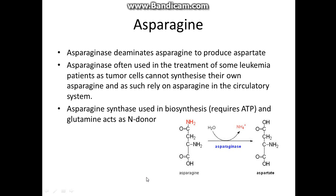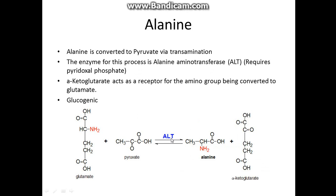Asparagine is named after asparagus, which is the first place it was isolated from. Asparaginase deaminates asparagine to produce aspartate, with water released in the process. The enzyme asparaginase is actually used as a treatment for some leukemias, because tumor cells cannot synthesize their own asparagine and rely on asparagine in the circulatory system — so they steal it from elsewhere. Asparaginase breaks down asparagine in the bloodstream, depriving the tumor. Asparagine synthase is used in biosynthesis, converting aspartate back to asparagine using glutamine as a nitrogen donor.